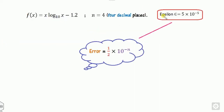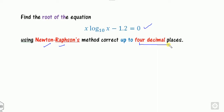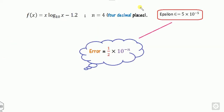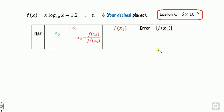Our task is to find the maximum permissible error. In this question it is given that you have to find the root correct up to four decimal places. If someone asks you to find the root up to an error of 10 raised to power minus 3, that is the error. Since it is four decimal places, write n = 4. The maximum error is (1/2) × 10^(-n), which gives 5 × 10^(-5). Then complete the iteration table.